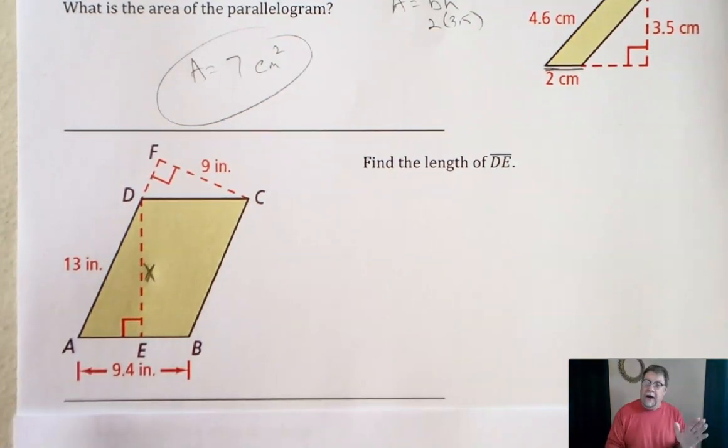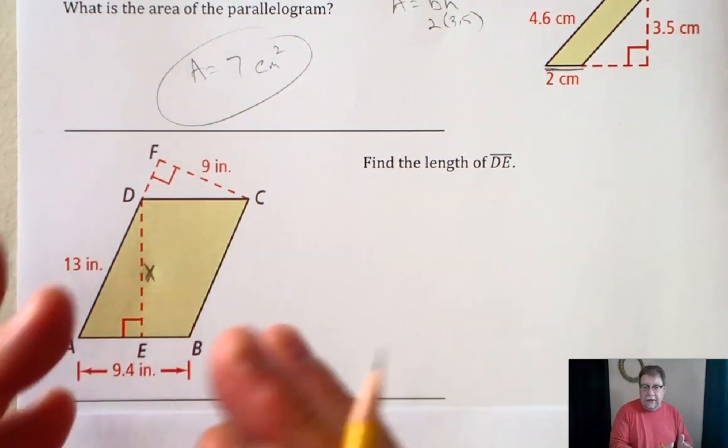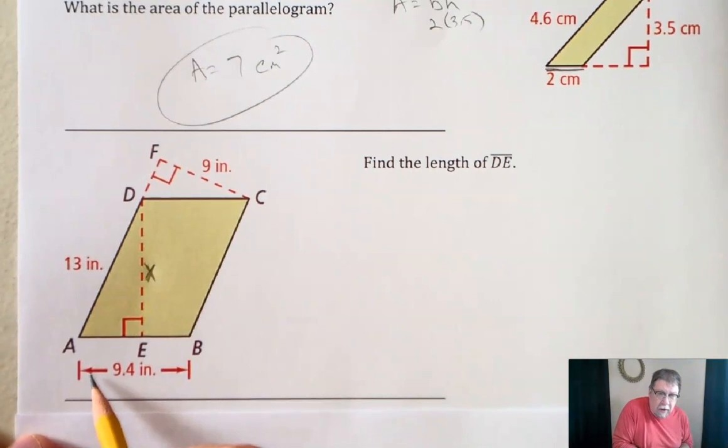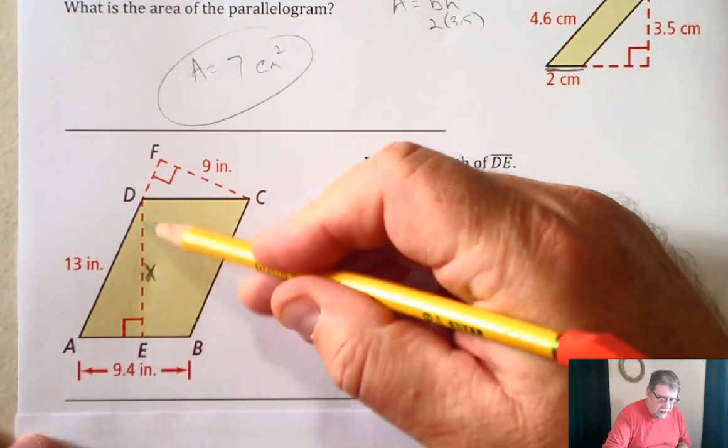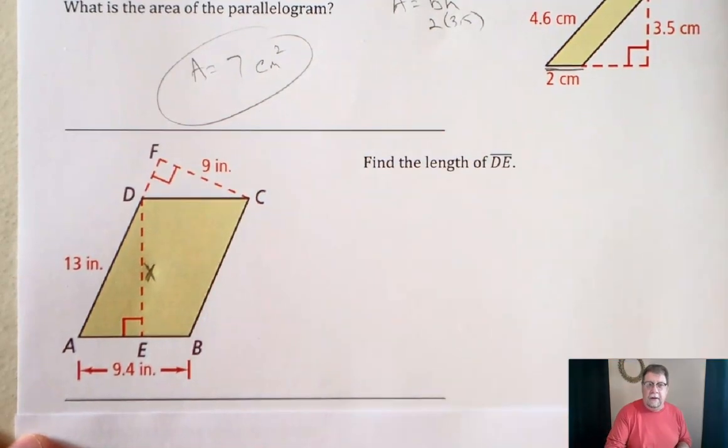And so the first thing you want to do is actually find out what the area of the parallelogram is. So you need to find a base and a height that are listed. So if you look, if you think of the 9.4 as the base, you have to think of X as the height because it's perpendicular. And so that's not really going to work for us.